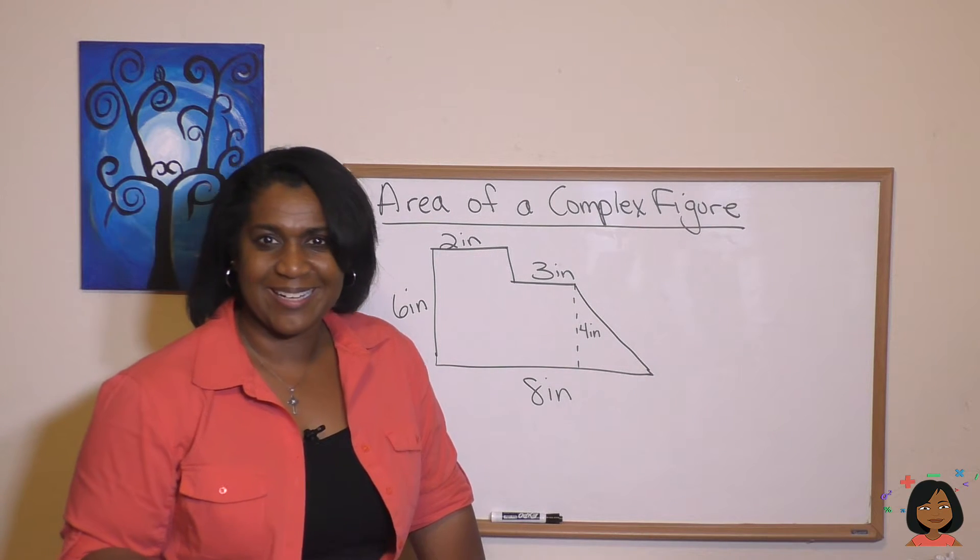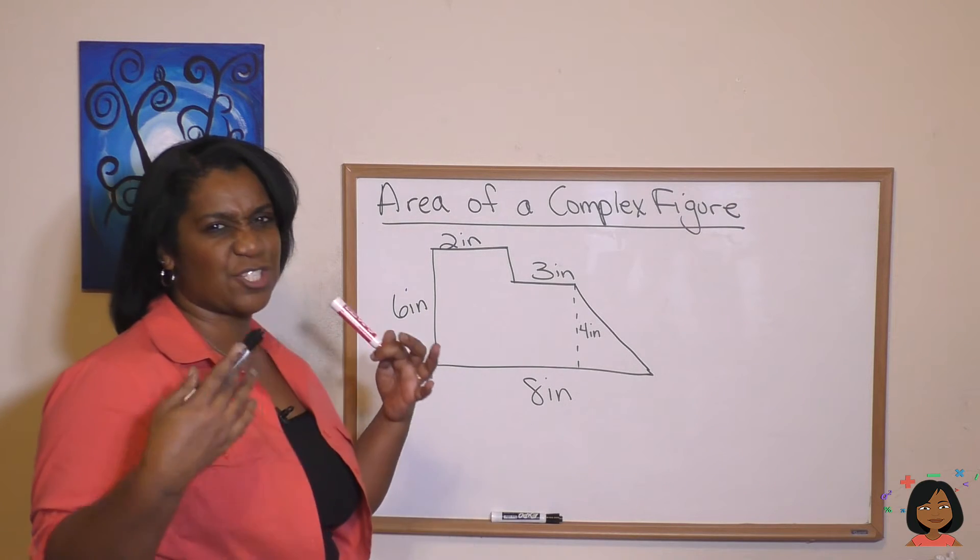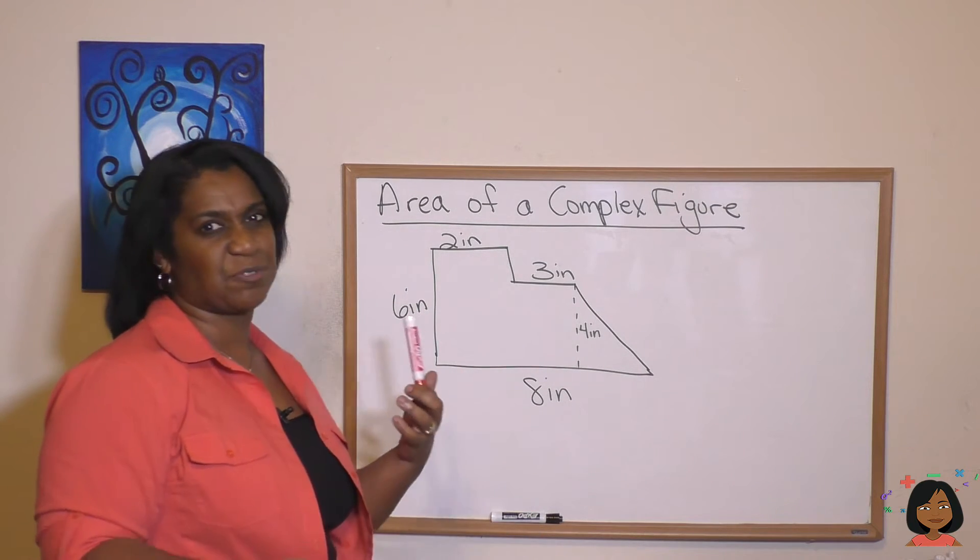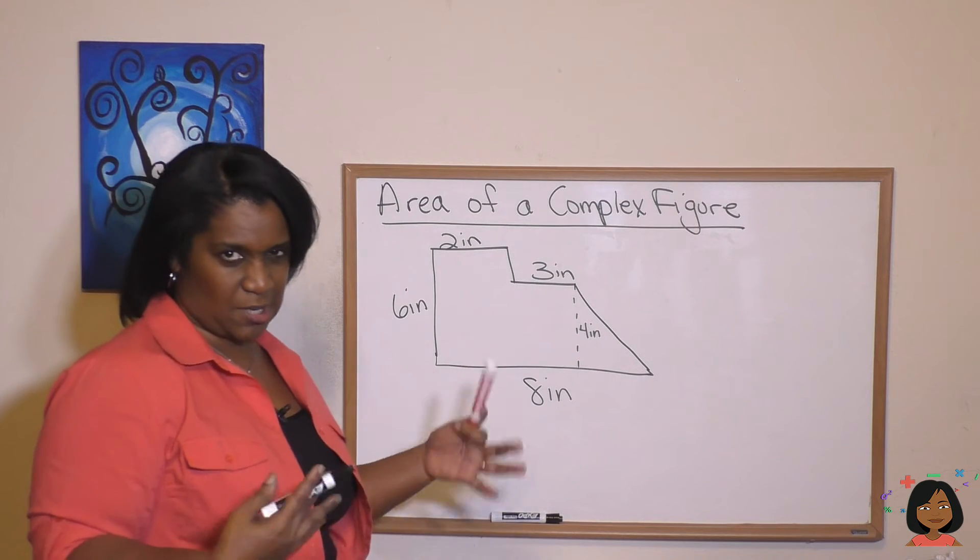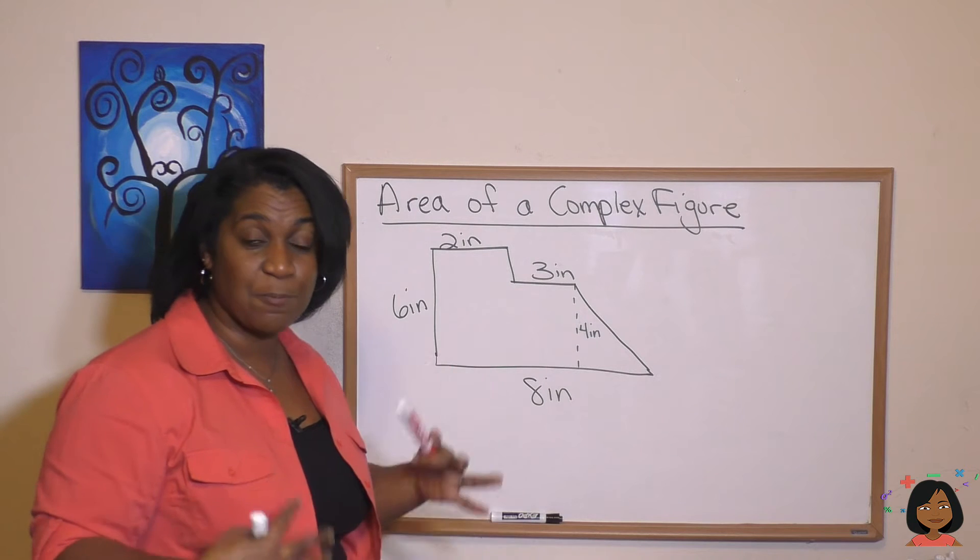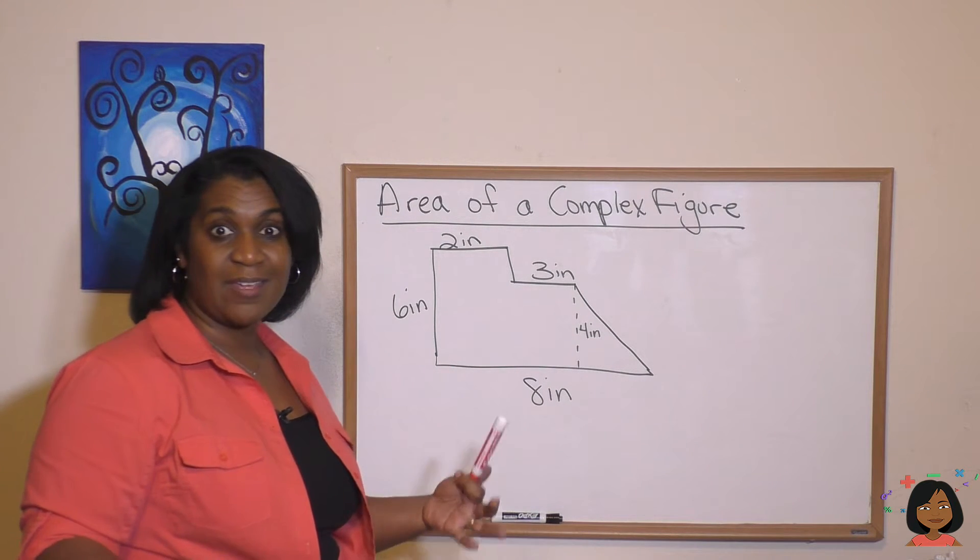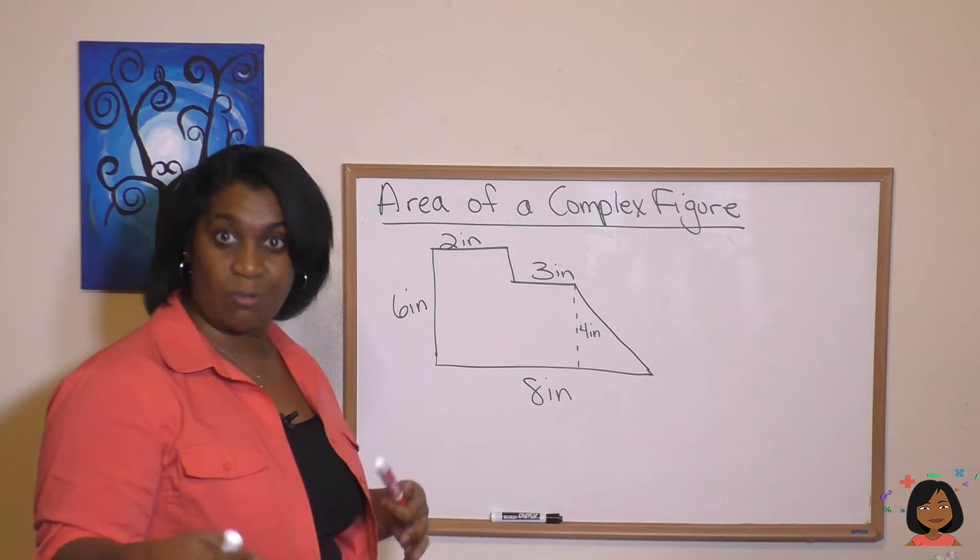What does that mean? A complex figure means that we've got something that's just not a straight up rectangle or straight up triangle, but it's got some kind of configuration going on. Don't worry. If you know how to break it down appropriately into smaller chunks, smaller pieces, then you can just do stuff that you know. Take a look.